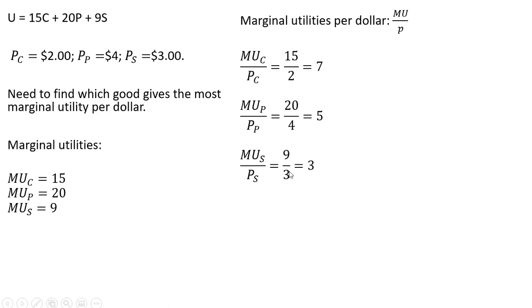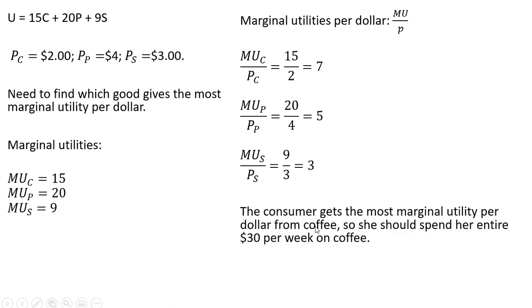What we're looking for is what gives us the greatest bang for our buck, and that is coffee. The consumer gets the most marginal utility per dollar from coffee, so she should spend her entire $30 per week on coffee. Spending $30 on something that costs $2 a cup, she'll be able to afford 15 cups of coffee. She will not buy any protein drinks or sports drinks, as they give less marginal utility per dollar.